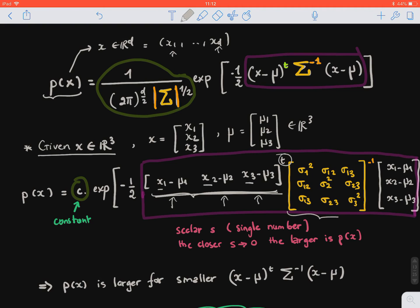And multiply by the inverse of the covariance matrix. So the covariance matrix has three by three dimensions, because we have three features.